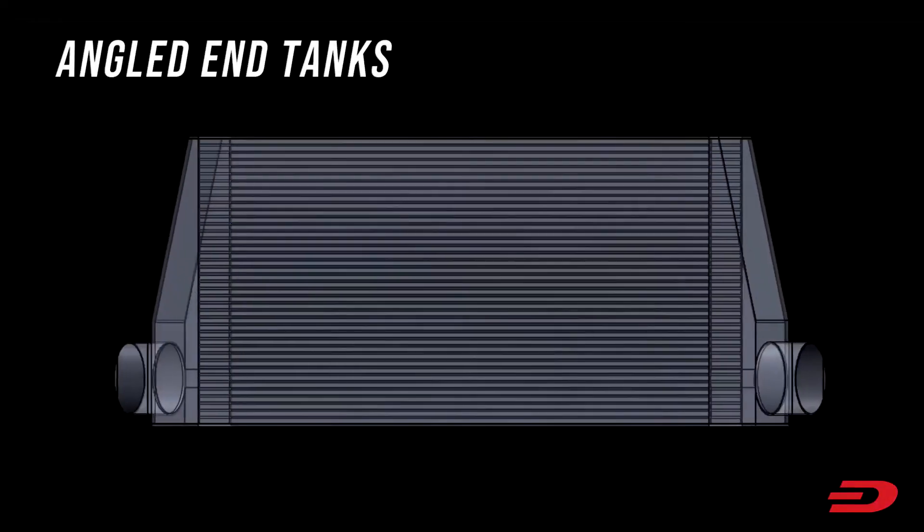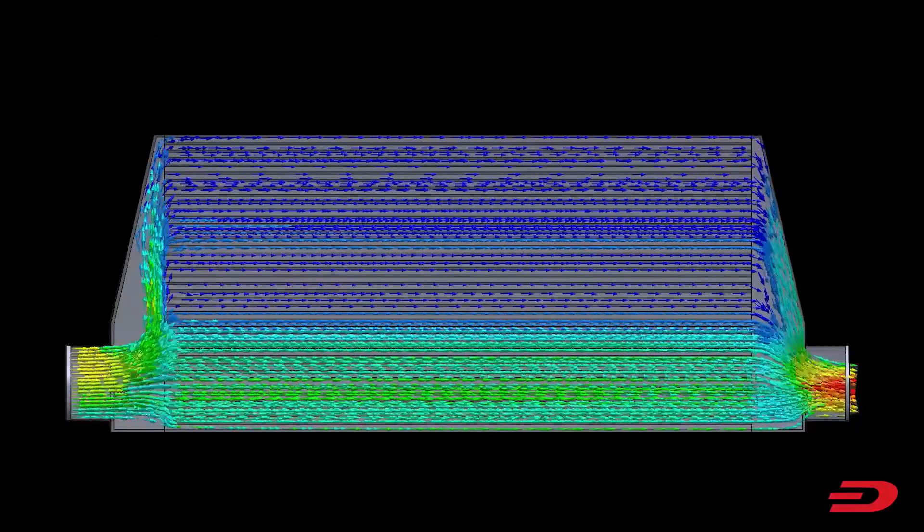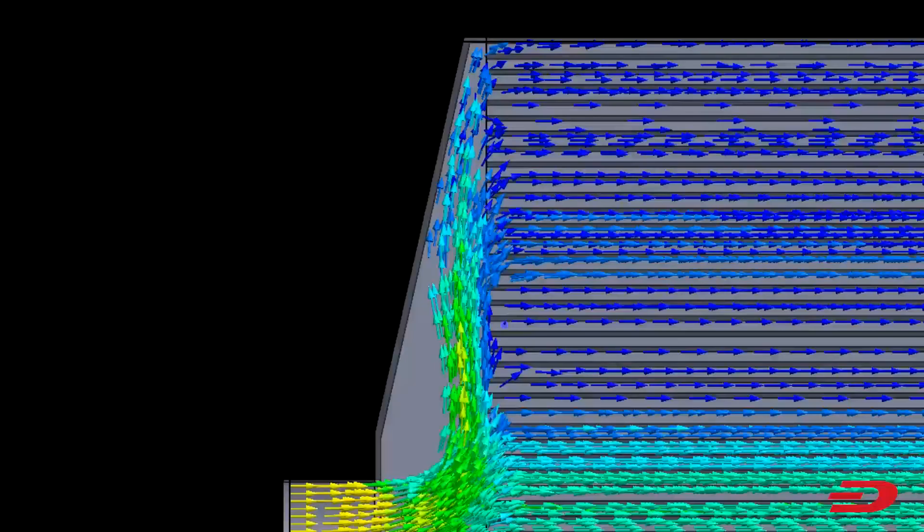The next design addresses this, an intercooler with angled end tanks. By angling the end tank, the void is removed and turbulence can no longer form.